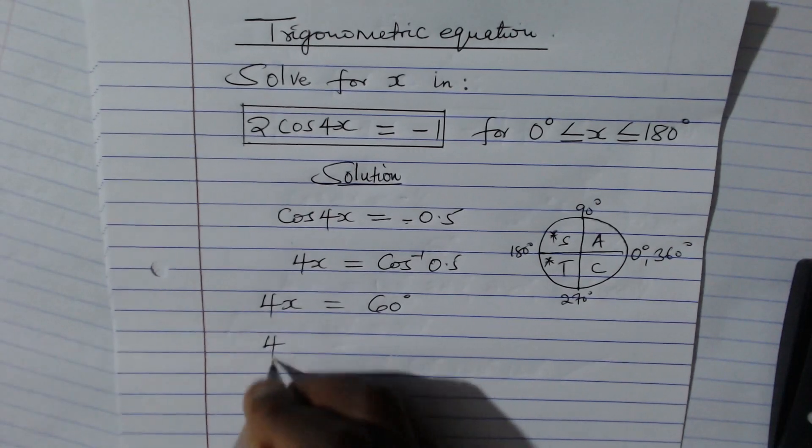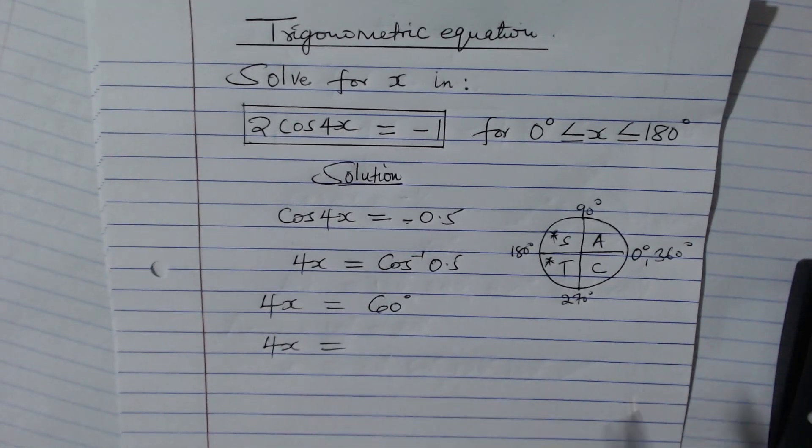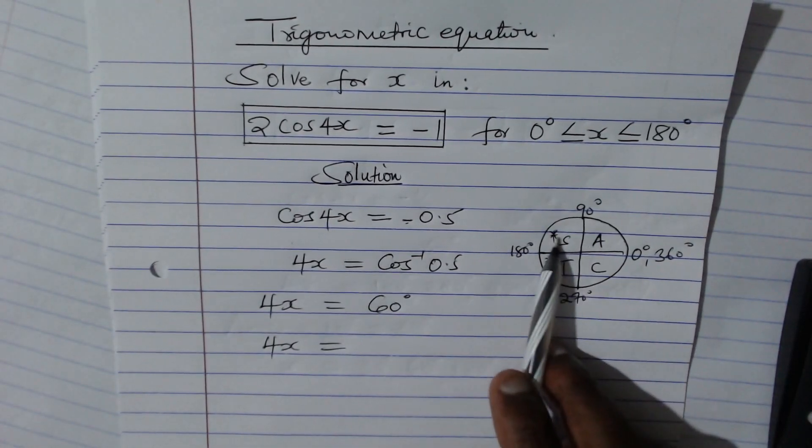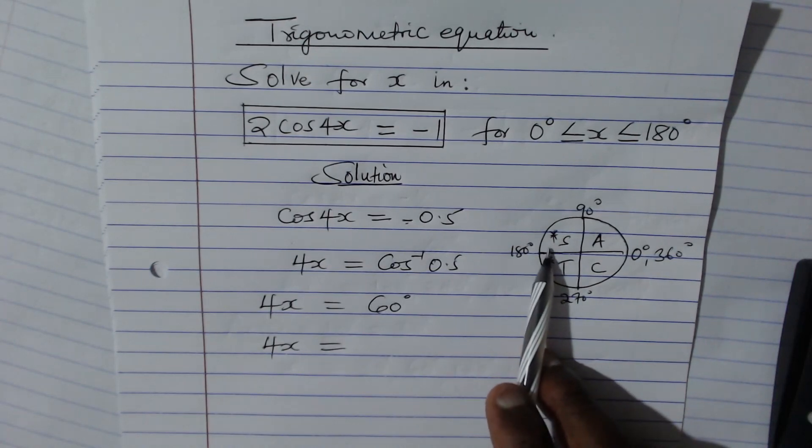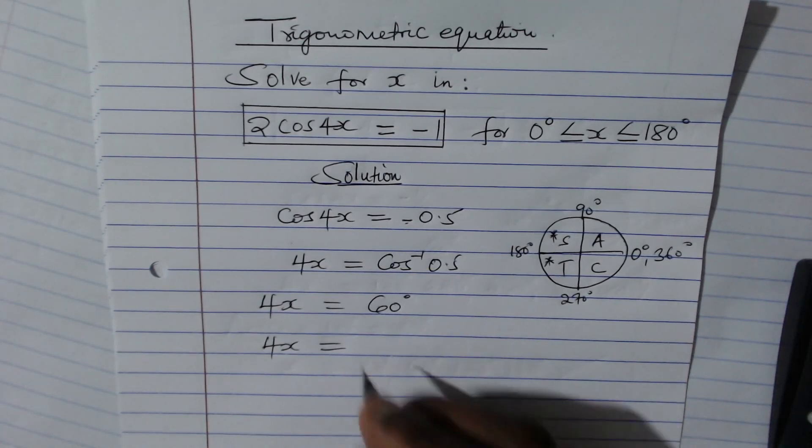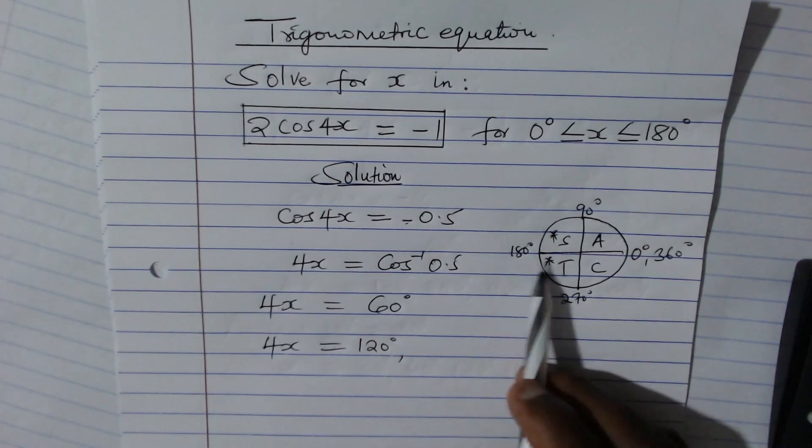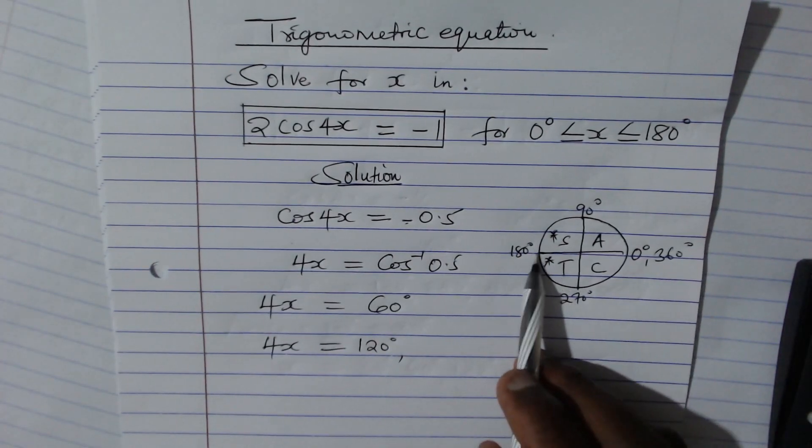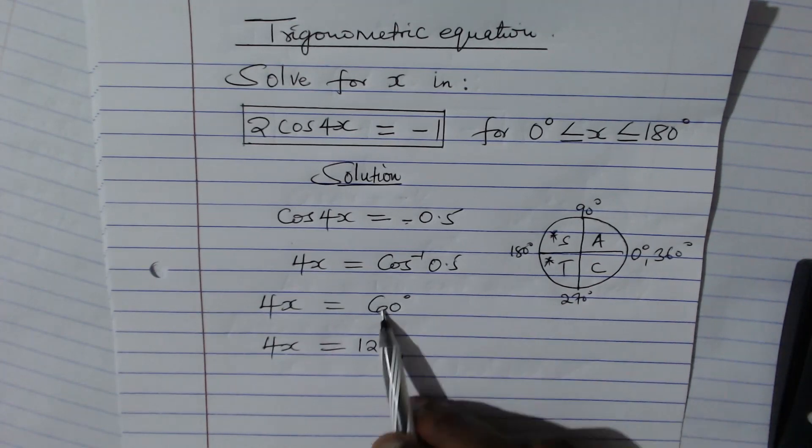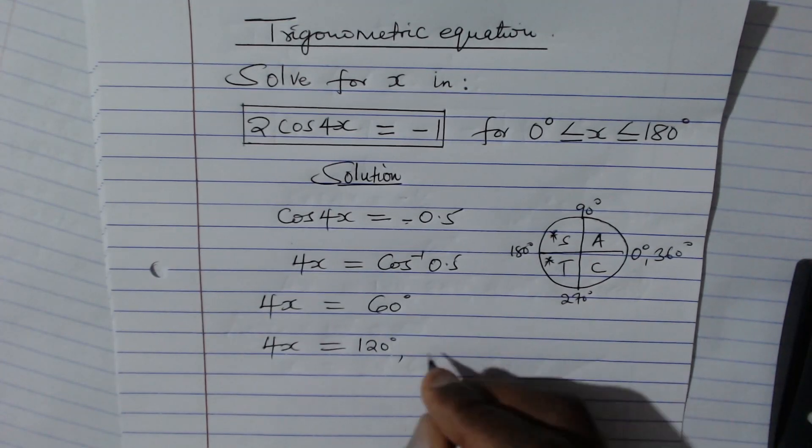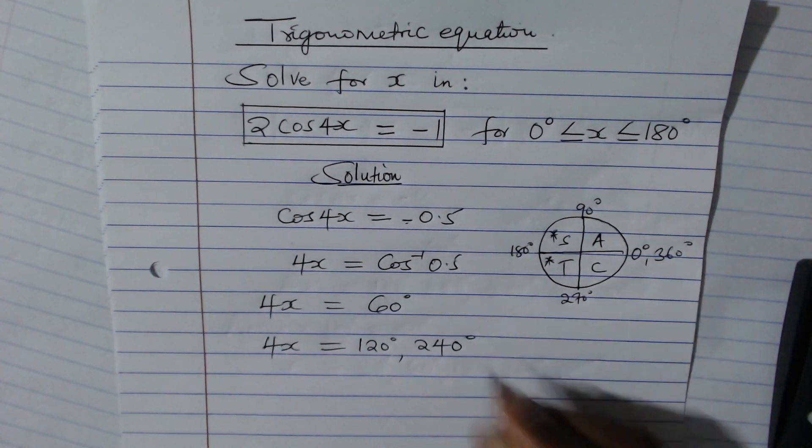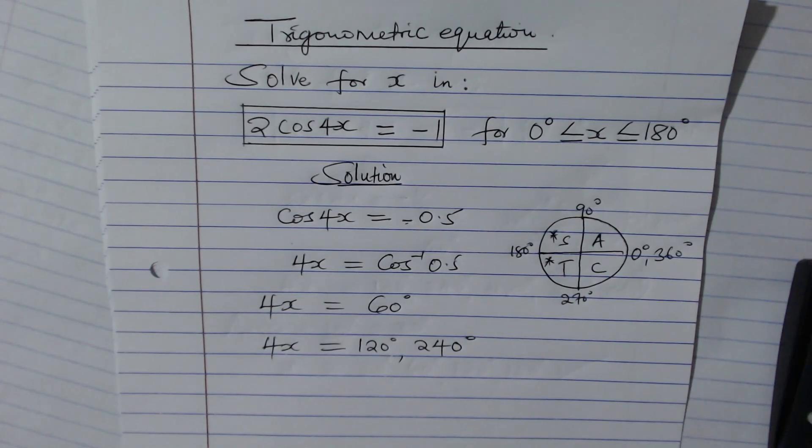So therefore, 4x equals, using 60 in the second quadrant, how do you get the angle? We take 180 - 60, we'll get 120. And then how do you get the angle in the third quadrant? We take 180 plus that acute angle, 180 + 60, you get 240 degrees, like that.